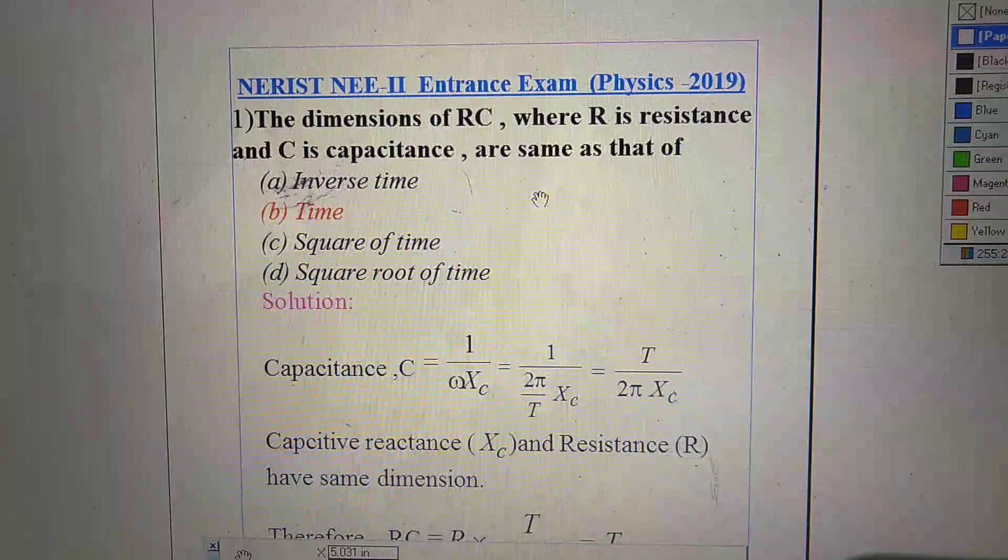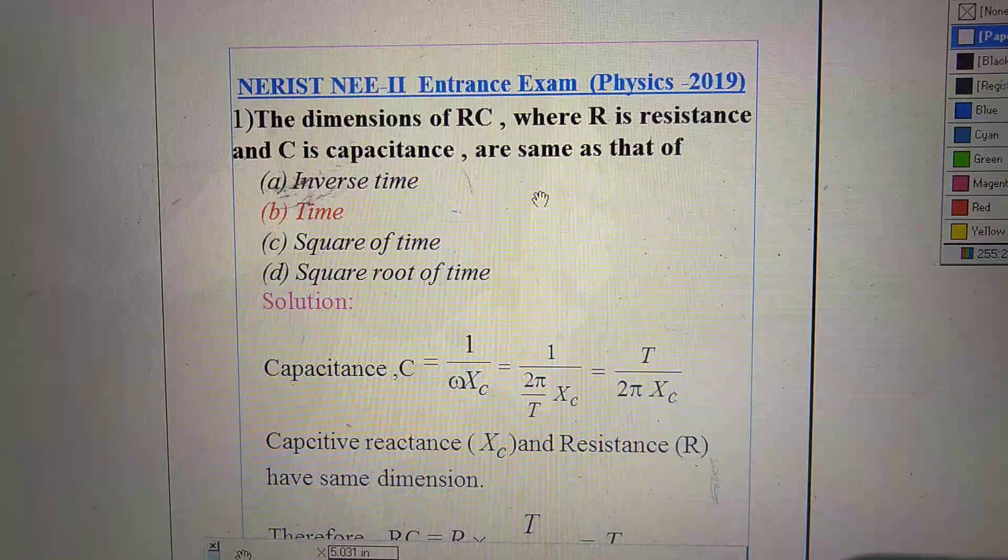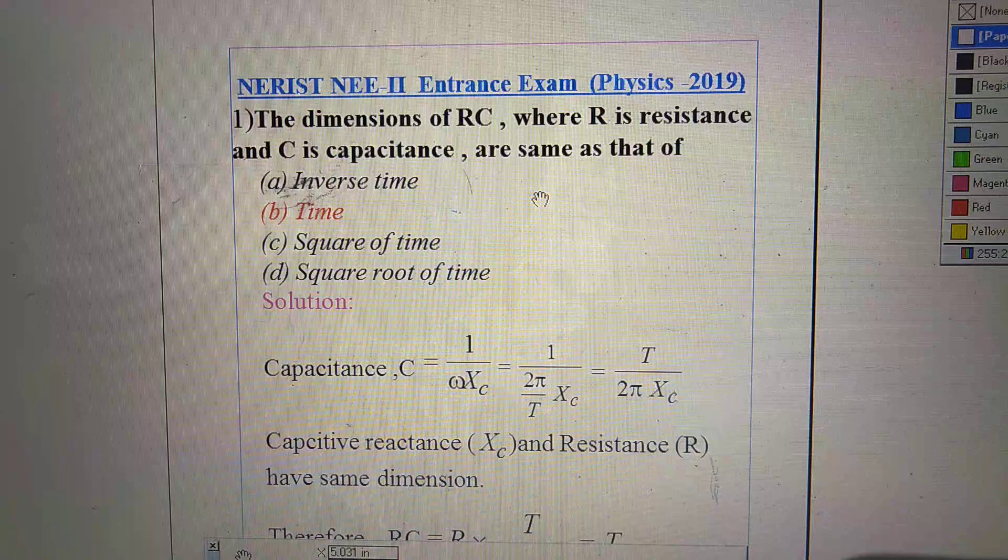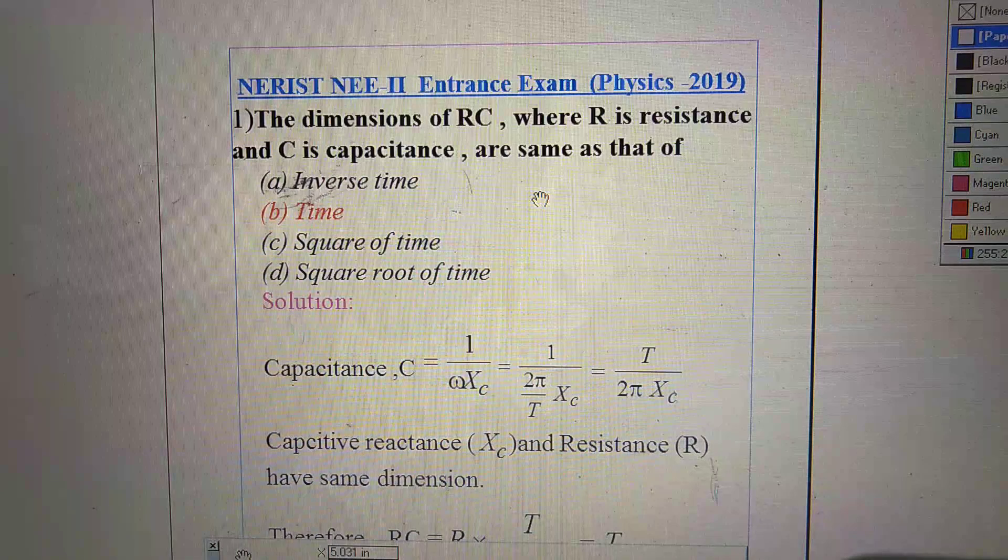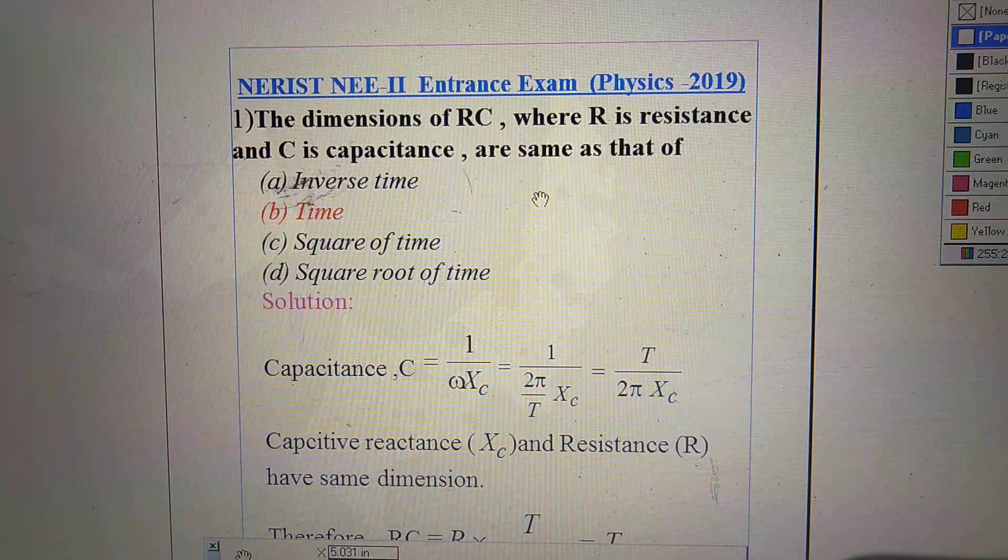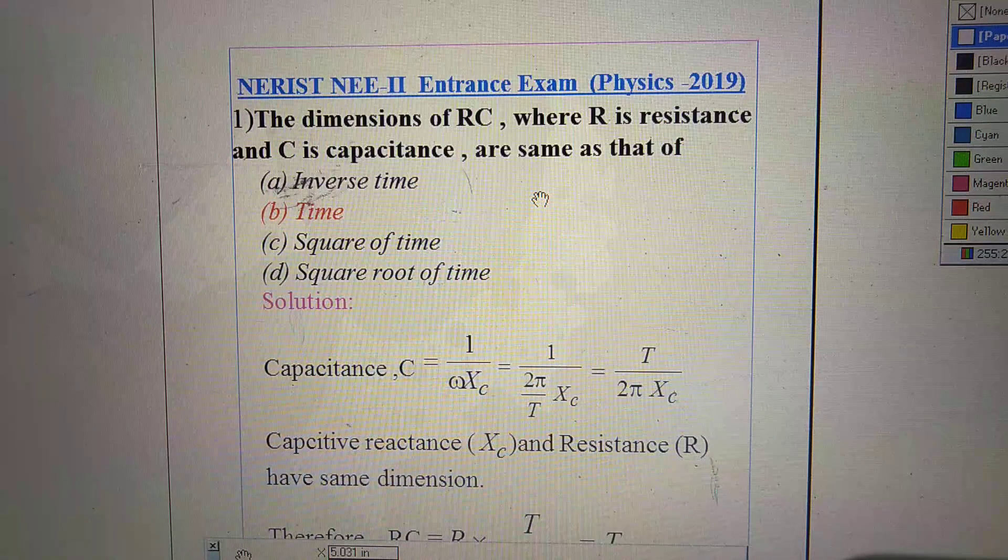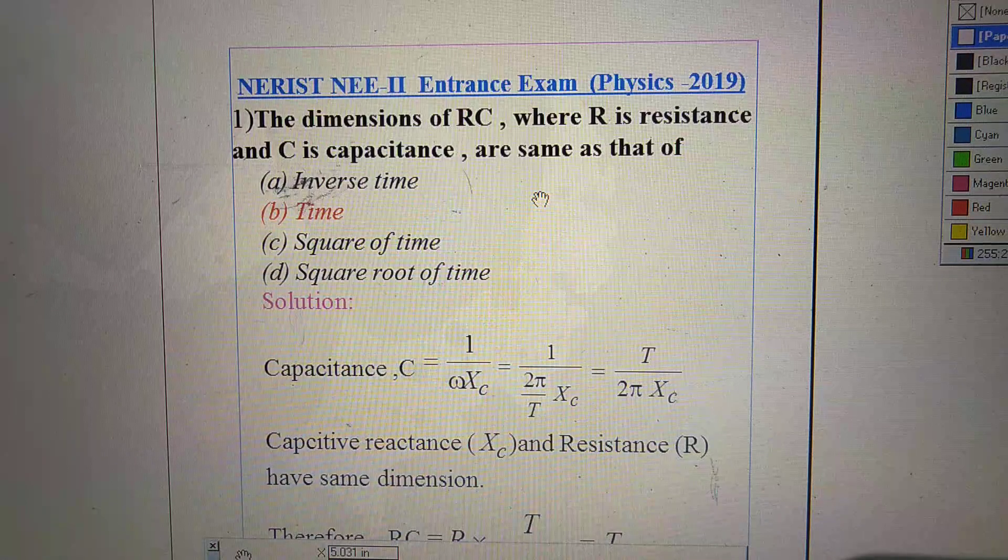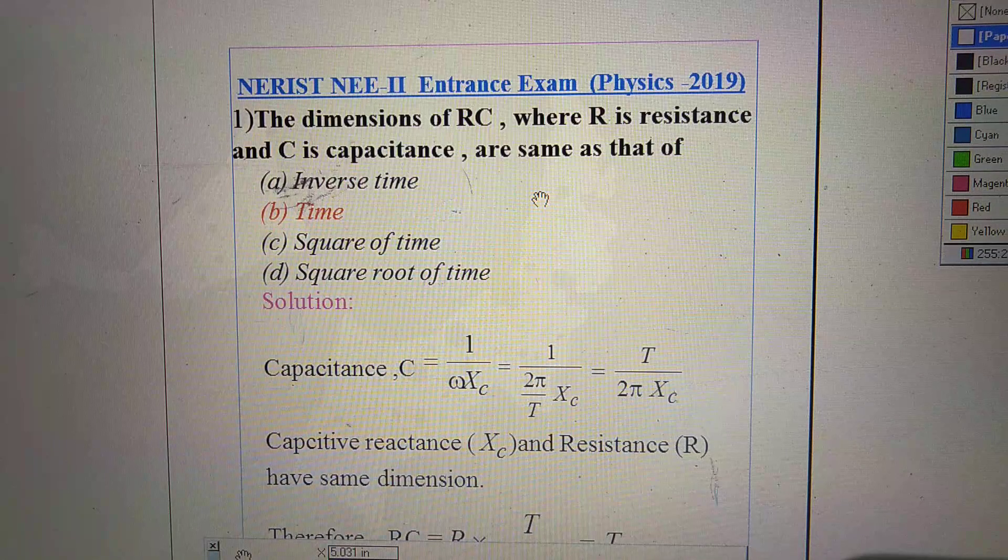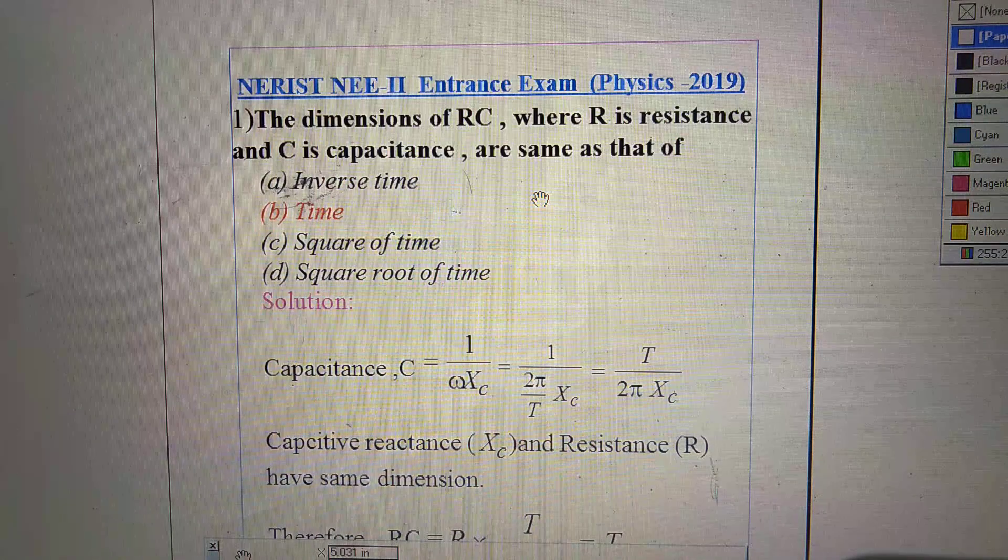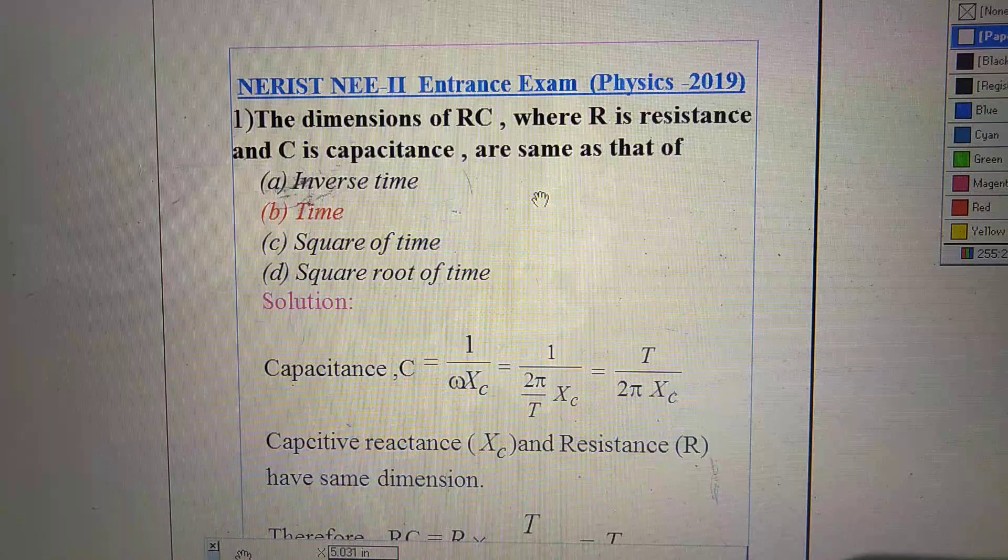First question. The dimension of RC, where R is resistance and C is capacitance, are same as that of... So here 4 options are. Number A: inverse time. Number B: time. Number C: square of time. Number D: square root of time.